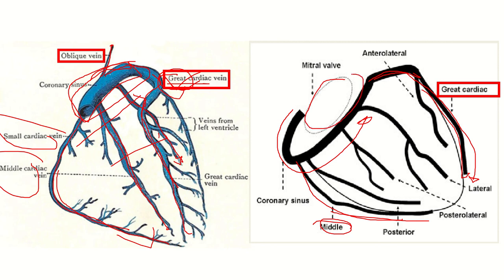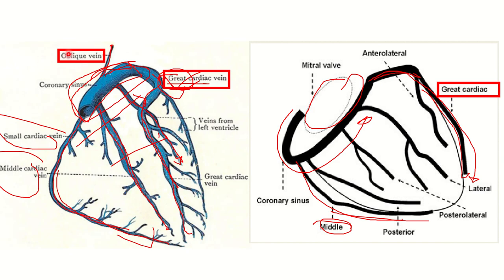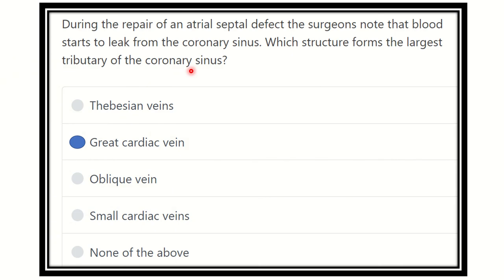So finally, the great cardiac vein is the largest tributary of the coronary sinus. The other veins include the Thebesian vein which lies in the right atrium — it is a smaller vein. The oblique vein supplies the left atrium but is smaller. The small cardiac vein lies in the right part near the right atrium and is also a small branch. The 'none of the above' option is not correct.